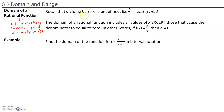Recall that dividing by zero is undefined. So if you take any number divided by zero, the answer will be undefined. So the domain of a rational function includes all values of x except those that cause the denominator to equal zero, because when the denominator equals zero, we get division by zero, giving us an undefined value — meaning we do not have an output y. In other words, if f(x) equals p over q, then the denominator q cannot be zero, and this is called a restriction on the domain.